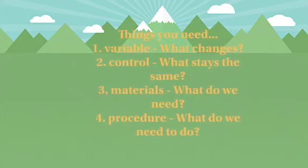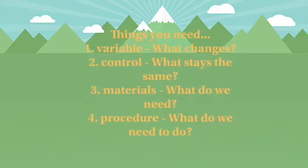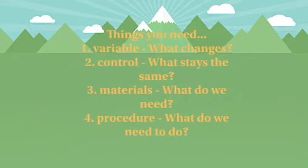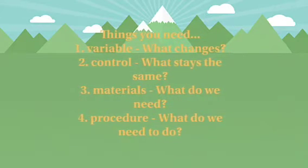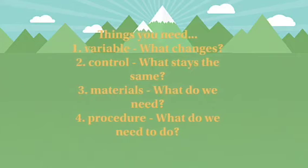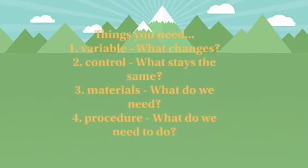Here are some things you need during an experiment. First, you need a variable. What changes? Two, you need control. What stays the same? Three, you need the materials to get the experiment running. And four, you need a step-by-step procedure to keep in mind during the experiment.